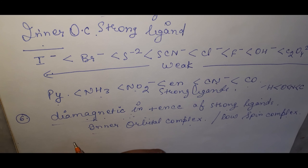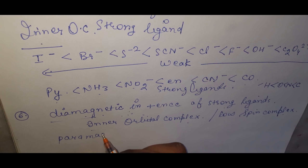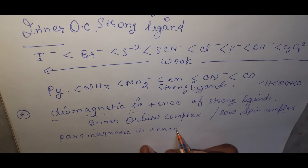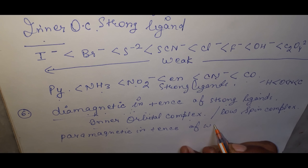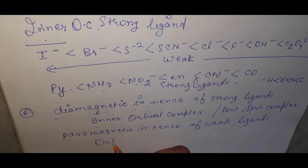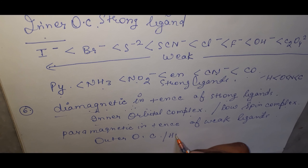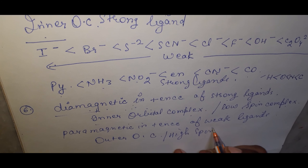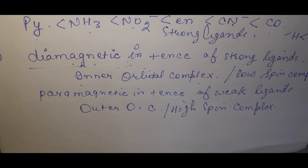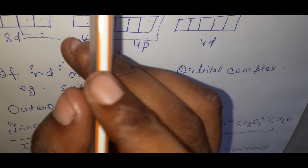Conversely, complexes formed in the presence of weak ligands are paramagnetic, because weak ligands cannot cause electron pairing. These form outer orbital complexes and are called high spin complexes.